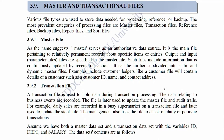3.9 Master and Transactional Files. Various file types are used to store data needed for processing, reference, or backup. The most prevalent categories of processing files are: master files, transaction files, reference files, backup files, report files, and sort files.